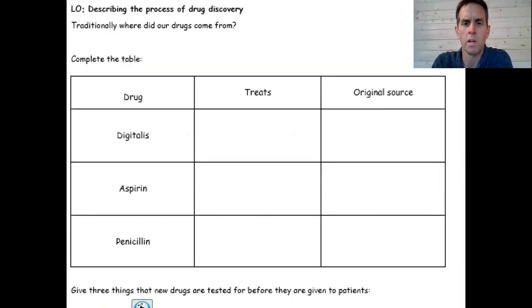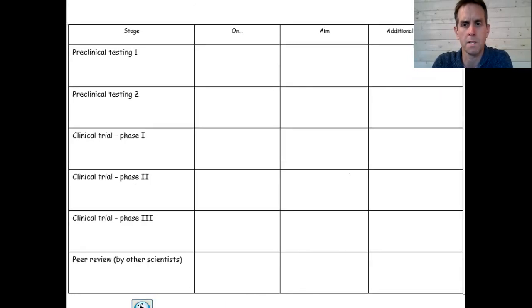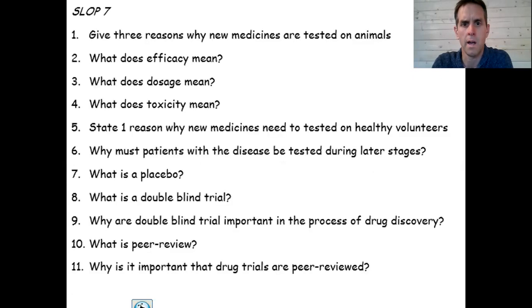So today we're going to look at the process of drug discovery, essentially how we find and produce new drugs when we need to treat new diseases. And you're going to need a few different documents as normal. These are on Show My Homework. But if not, you can copy either straight from the screen or straight from when I go under the camera. So this is the first document, this is the second document, and this will be the practice questions we will use at the end of this lesson. So I'm going to switch now across to the camera.